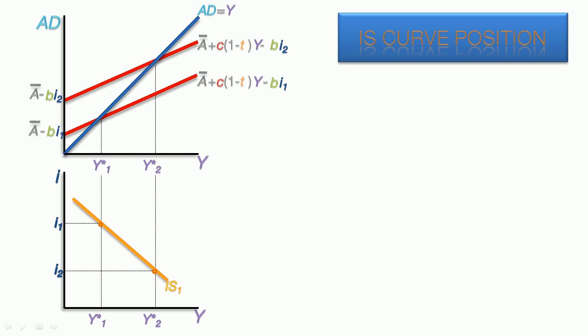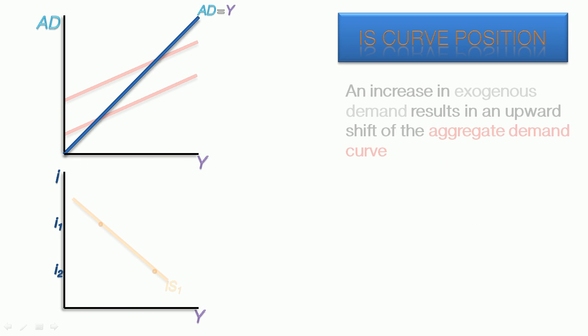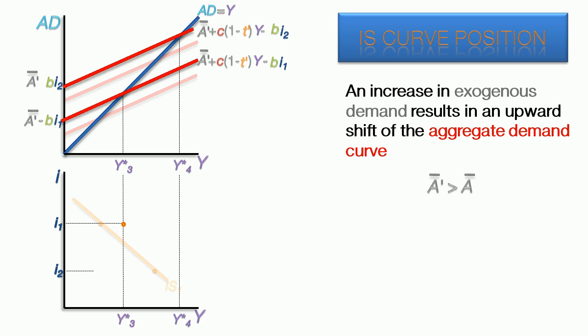Moving on to the position of the IS curve. An increase in exogenous demand results in an upward shift of the aggregate demand curve. A-bar prime will represent the higher level of exogenous demand. The higher aggregate demand curves produce an IS curve that is shifted outward as a result of the increase in exogenous demand.